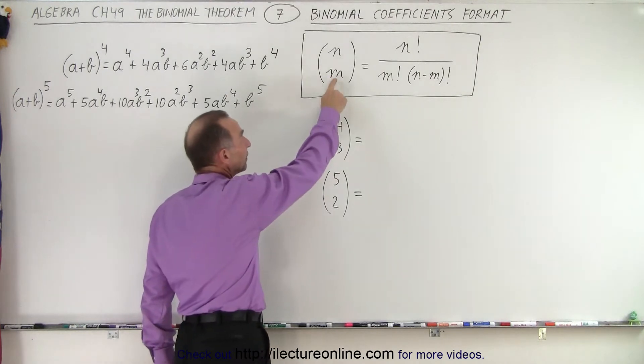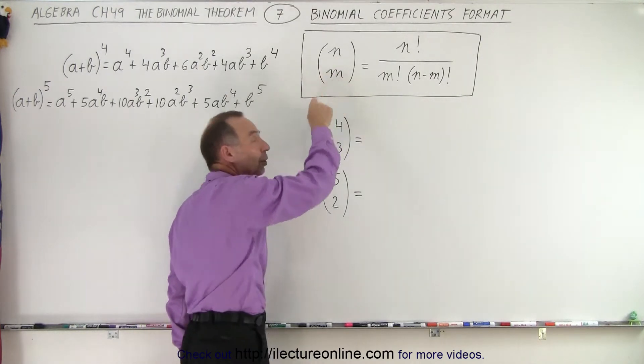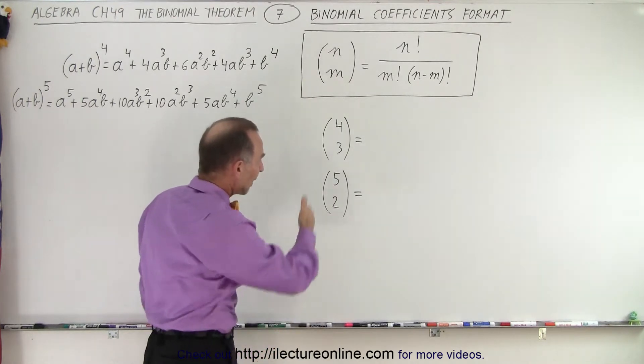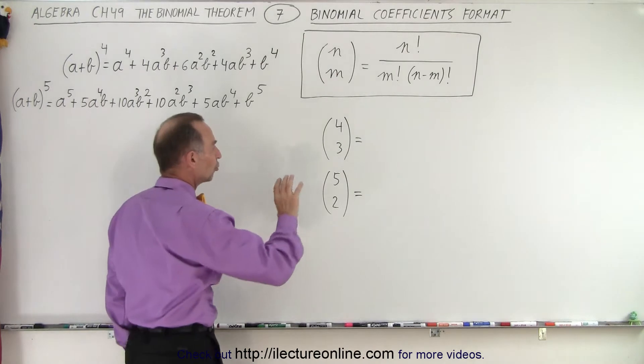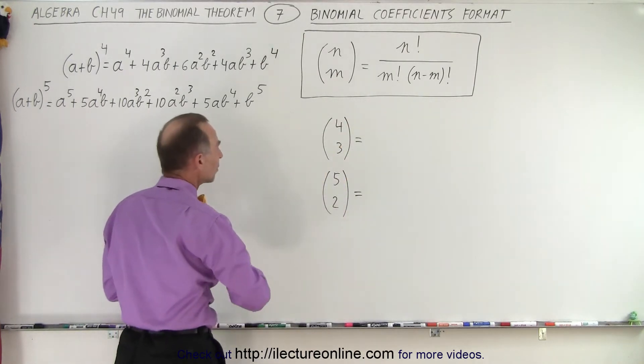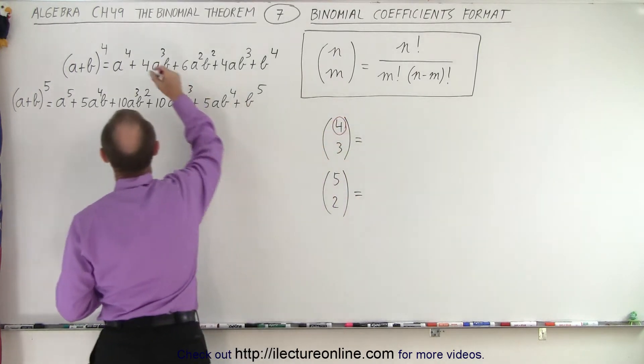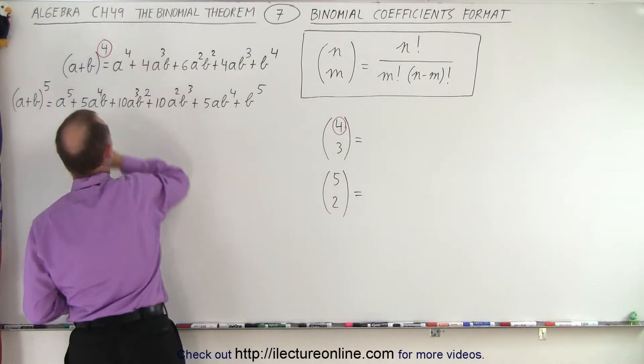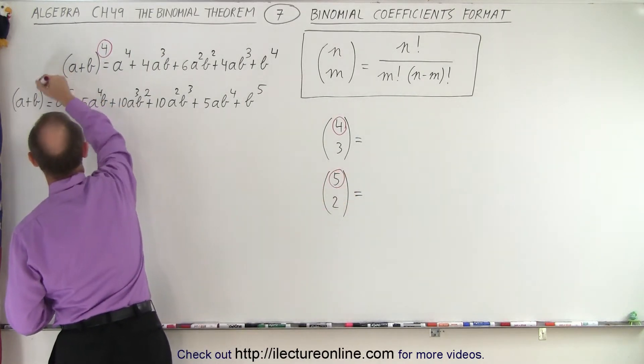Note that m will never be bigger than n; n will always be greater than or equal to m. Before we work through examples, let's understand the significance of these numbers. First, the top number is the same as the exponent in the binomial expansion.